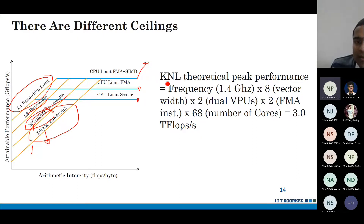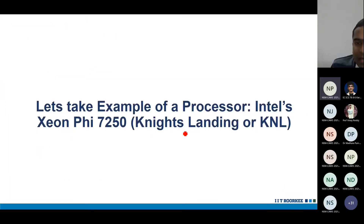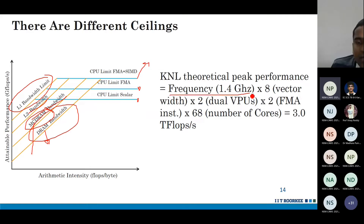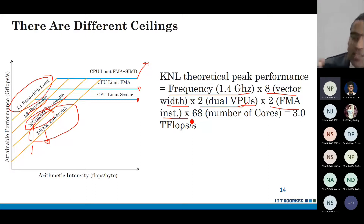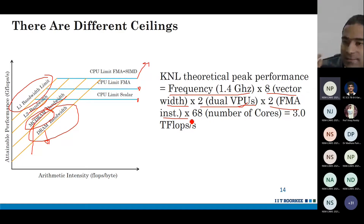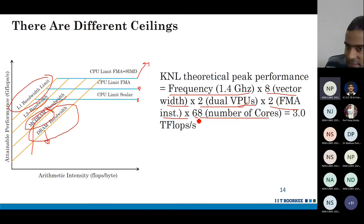Knights Landing has a turbo frequency of 1.4 GHz and a vector width of eight. Every core has two VPUs — vector processing units. In each cycle each VPU can perform one FMA operation, and each FMA is counted as two operations because it is fused multiply and add. The overall Xeon Phi model 7250 has 68 cores. Each core has two VPUs and each VPU can perform one FMA instruction per cycle.